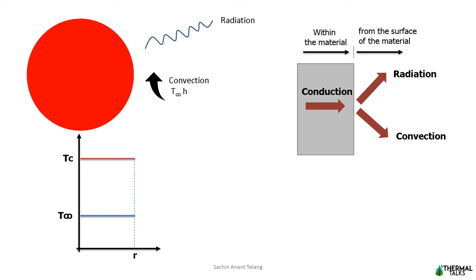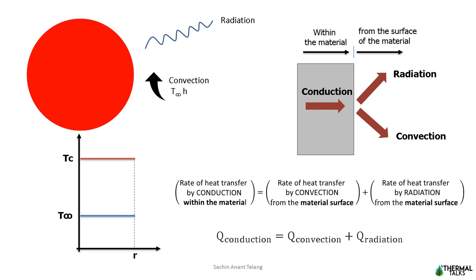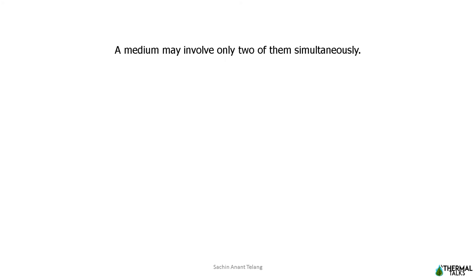Now under steady state condition, I can write the rate of heat transfer by conduction within the material is equal to rate of heat transfer by convection and rate of heat transfer by radiation from the material surface. So it is very important to understand conduction happens within the body, radiation and convection happen at the surface. Although we have three types of heat transfer mechanisms, a particular medium may involve only two of them simultaneously.